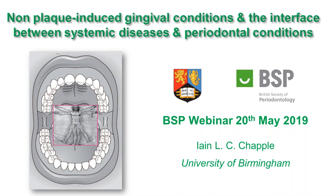Professor Chappell needs very little introduction within our society. He is head of the dental school at the University of Birmingham and has recently won the Distinguished Scientist Award through the IADR, the International Association of Dental Research, with a keynote address scheduled in Vancouver next month. He works tirelessly, is a great inspiration through his research in periodontology, and through his teaching is inspiring the next generation of students and periodontists.